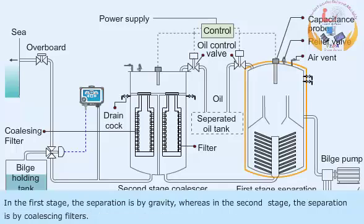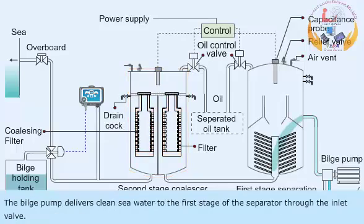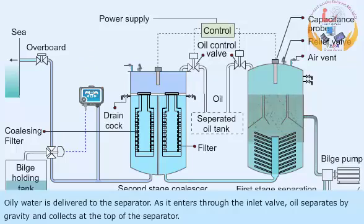In the first stage, the separation is by gravity, whereas in the second stage, the separation is by coalescing filters. The bilge pump delivers clean sea water to the first stage of the separator through the inlet valve. The vent is kept open until all the air is removed from the separator and water issues out. Oily water is then delivered to the separator, and as it enters through the inlet valve, oil separates by gravity and collects at the top of the separator.